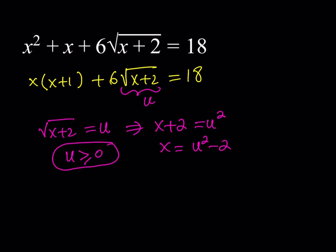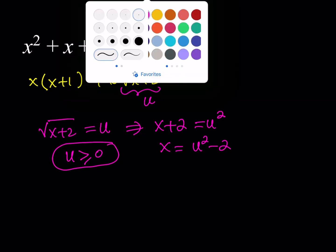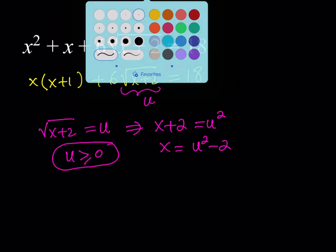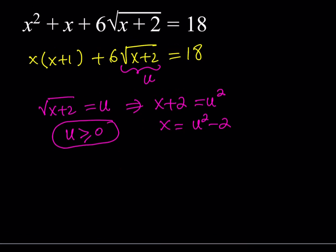So now this substitution basically allows me to write x in terms of u, and then hopefully it's going to simplify our process. So what I'm going to do is substitute that into our equation here. So I have x² + x, but I wrote it as x times (x+1). So I can replace x with u² - 2, and then x+1 is going to be u² - 1. And then I have 6u, and that's equal to 18.